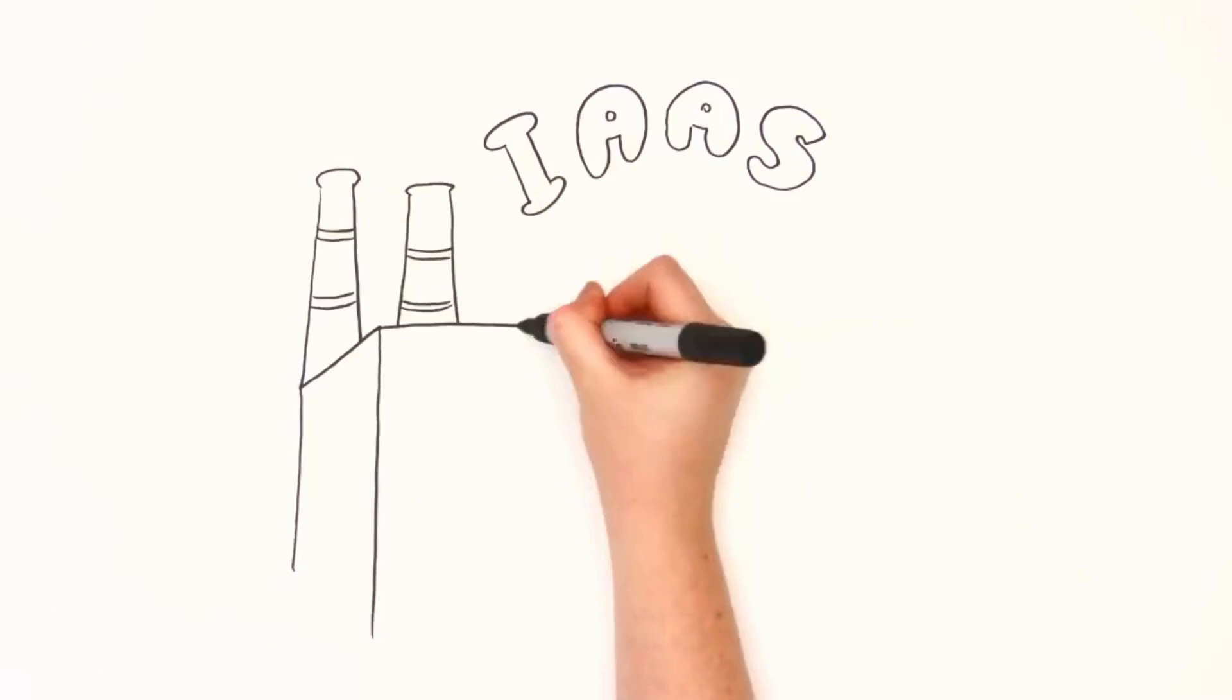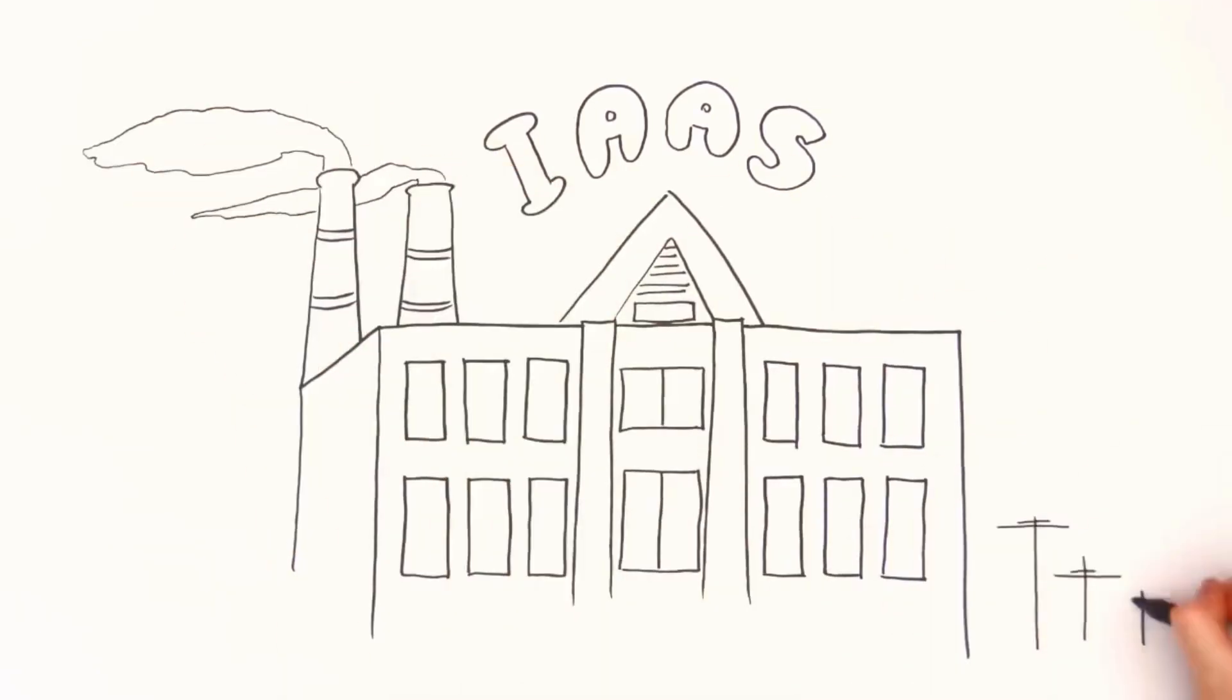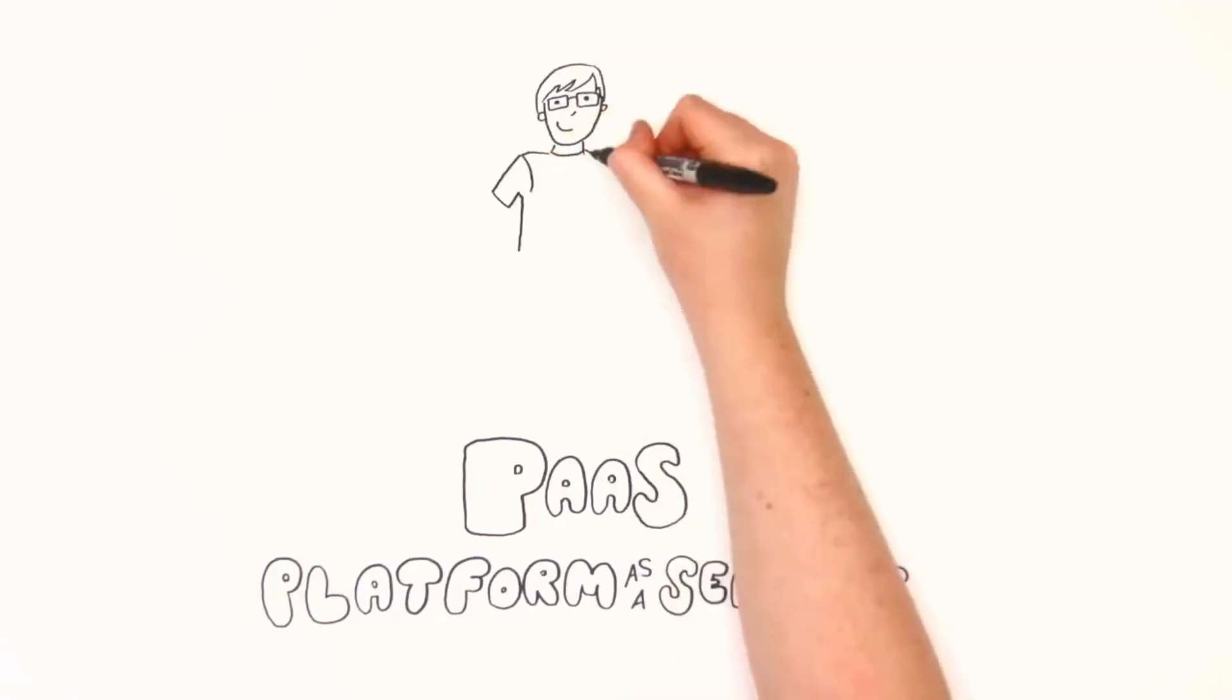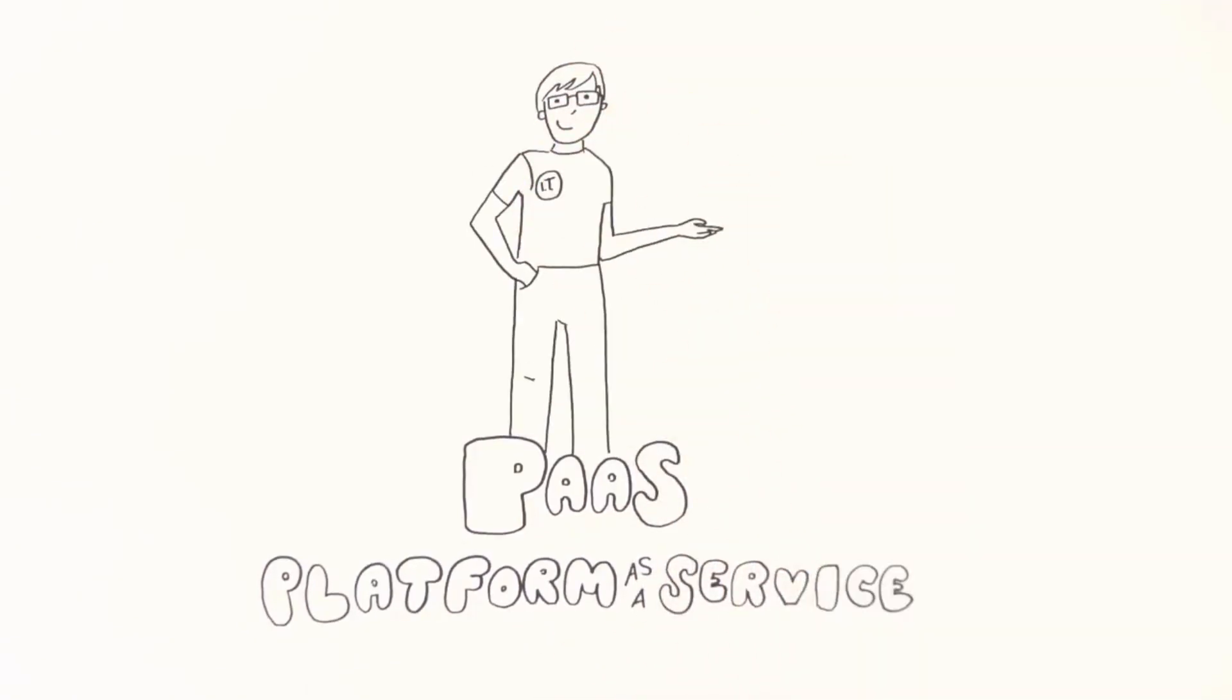IaaS is the power station at the core of all cloud models. PaaS, or platform as a service, builds on the power of IaaS as a platform to make it easier to collaborate and develop software.